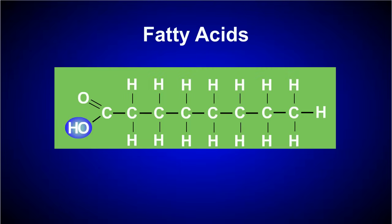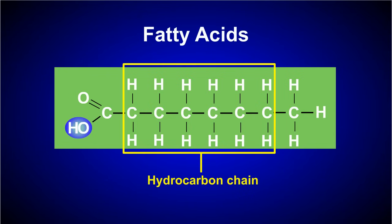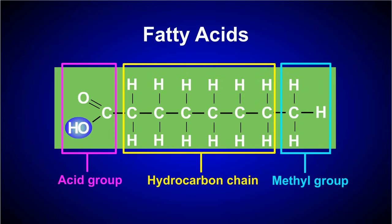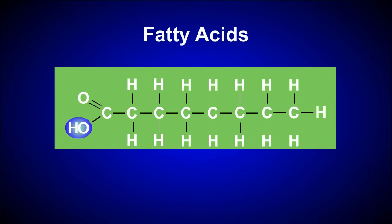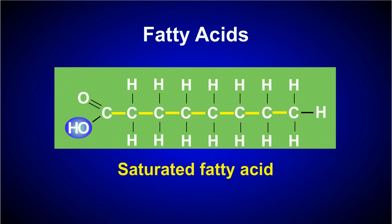At the molecular level, triglycerides contain two types of subunit molecules: glycerol and fatty acids. A fatty acid has three main parts: a chain of carbon and hydrogen atoms called the hydrocarbon chain, a methyl group at one end, and an acid group at the other end. Fatty acids can either be saturated or unsaturated. A fatty acid that has only single carbon-to-carbon bonds is known as a saturated fatty acid, because the carbon chain is saturated with all the hydrogen atoms it can hold.